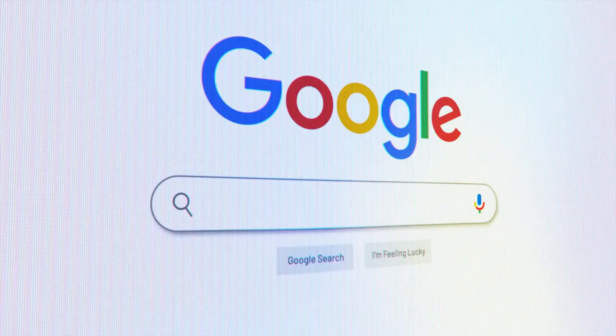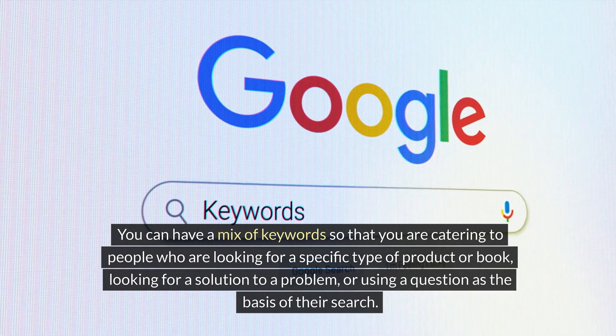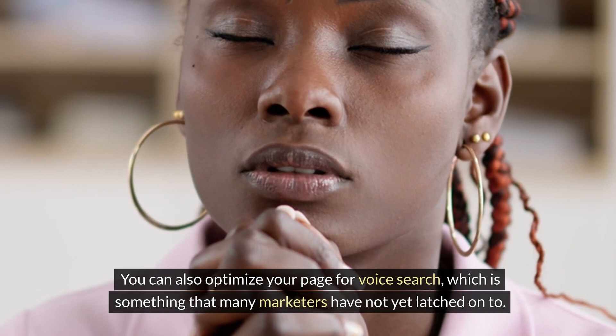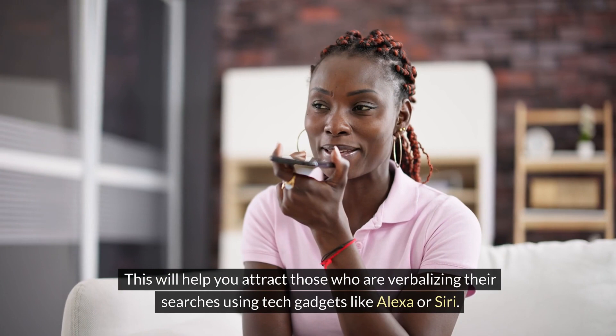You can have a mix of keywords so that you are catering to people who are looking for a specific type of product or book, looking for a solution to a problem, or using a question as the basis of their search. You can also optimize your page for voice search, which is something that many marketers have not yet latched onto. This will help you attract those who are verbalizing their searches using tech gadgets like Alexa or Siri.